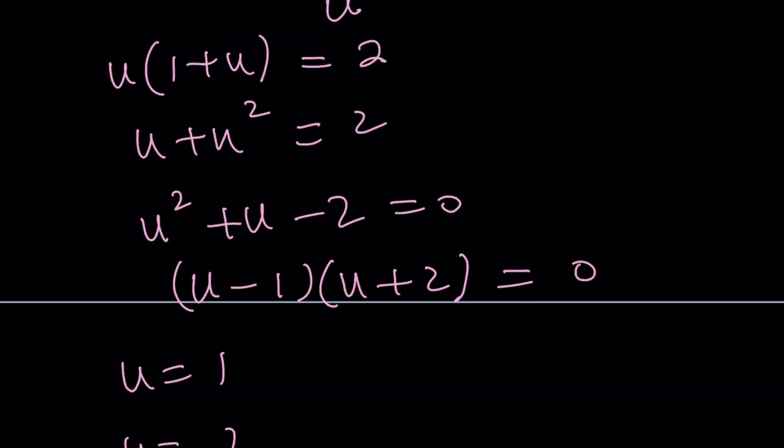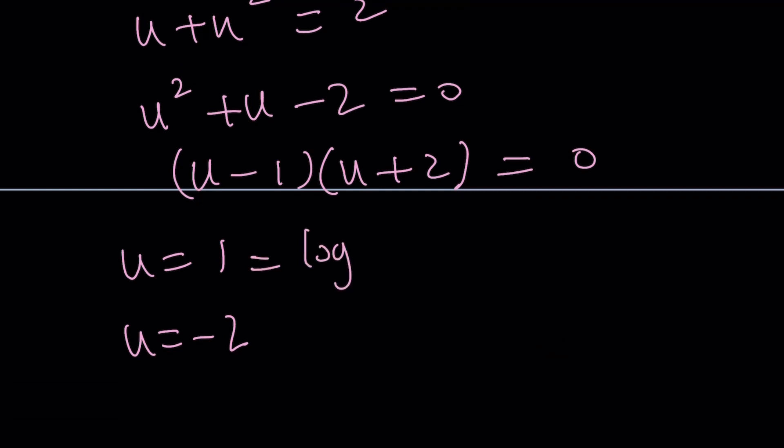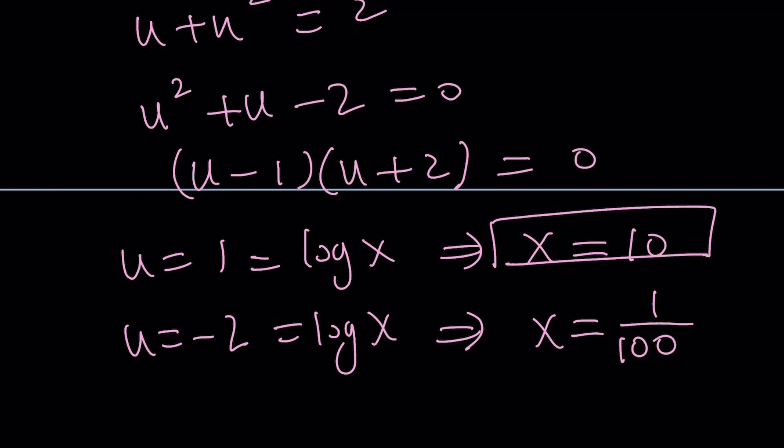And from here, u equals 1 or u equals negative 2. But u is log x. So this is log x. This implies x is equal to 10, right? And this is log x as well. And from here, x equals 1 over 100. Or you can say one hundredth. So there are basically two solutions.